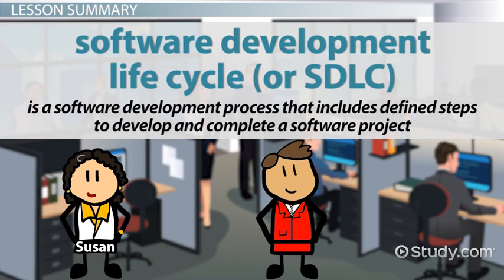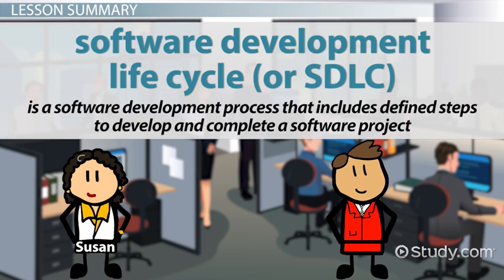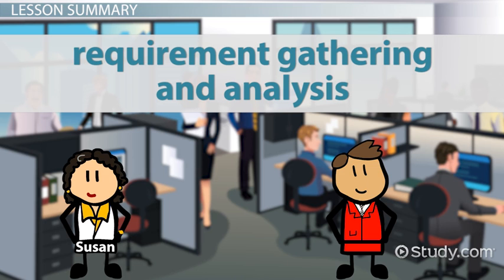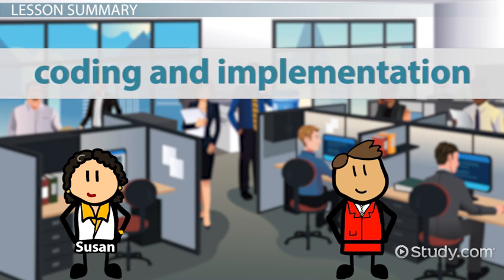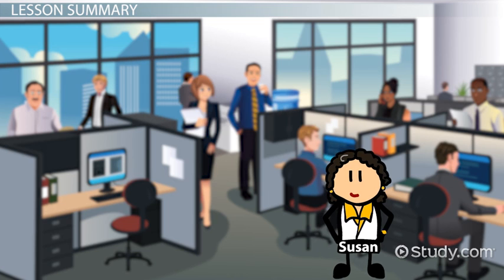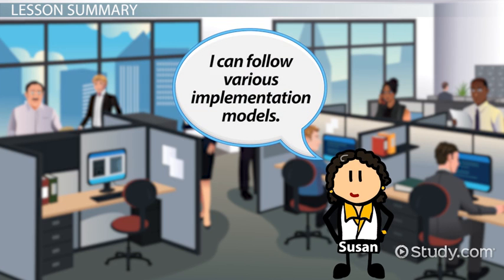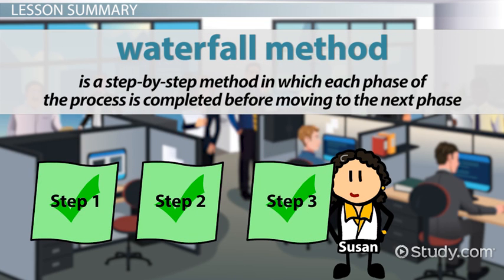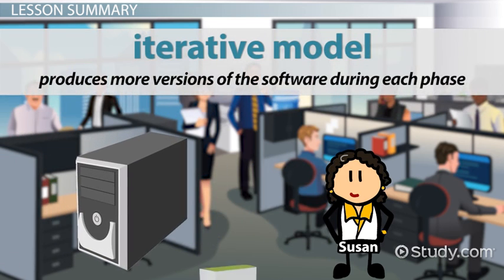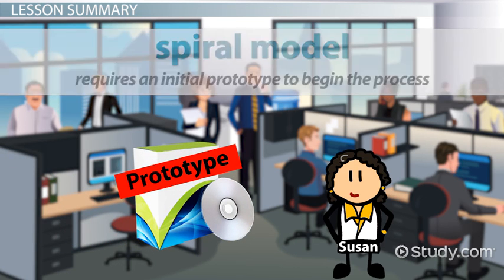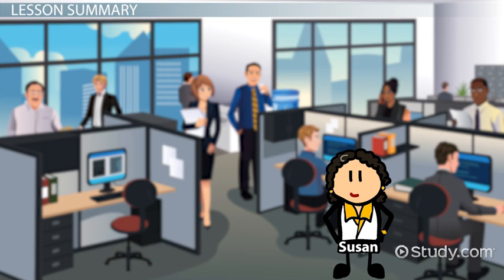The Software Development Lifecycle, or SDLC, is a software development process that includes defined steps to develop and complete a software project. The SDLC is the blueprint for the entire project, and it includes six common stages: requirement gathering and analysis, software design, coding and implementation, testing, deployment, and maintenance. A project manager can implement an SDLC process by following various models, including the Waterfall model, Iterative model, and the Spiral model. The Waterfall model is a step-by-step method in which each phase is completed before moving to the next. The Iterative model produces more versions of the software during each phase, and the Spiral model requires an initial prototype to begin the process. The project manager decides which model is used based on customer specifications.